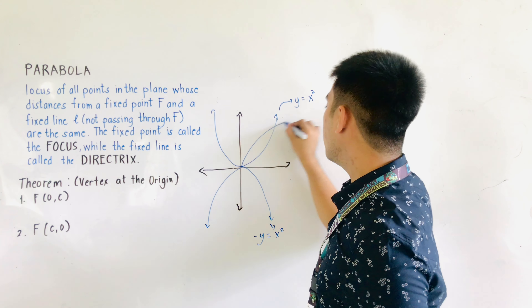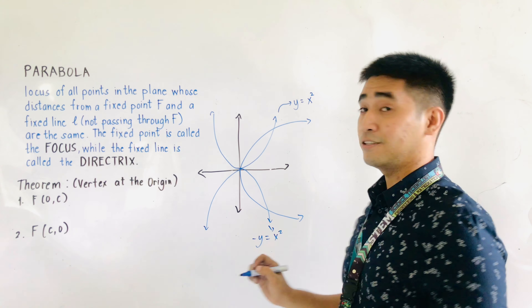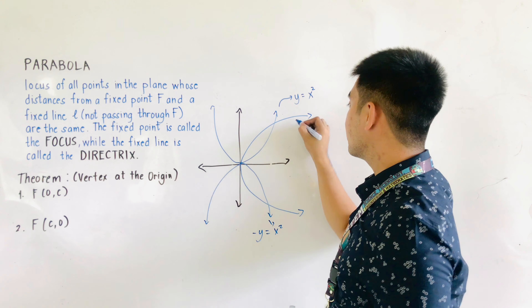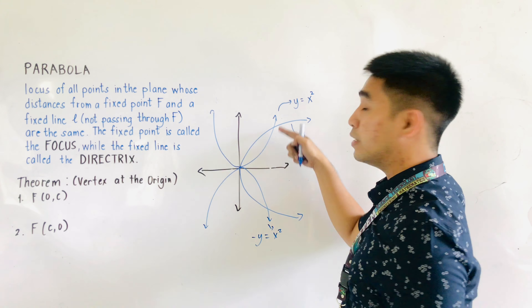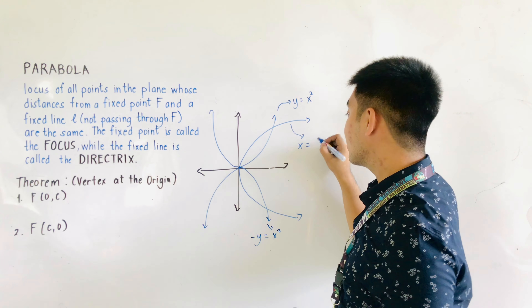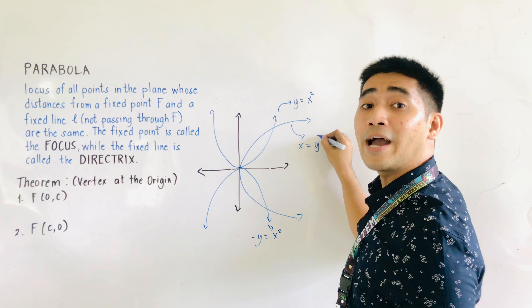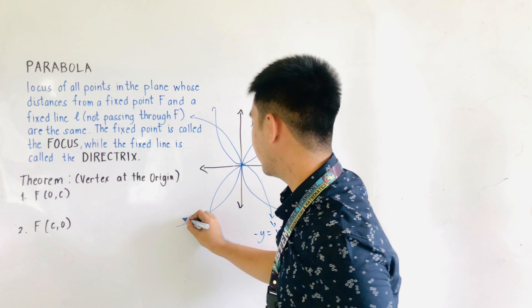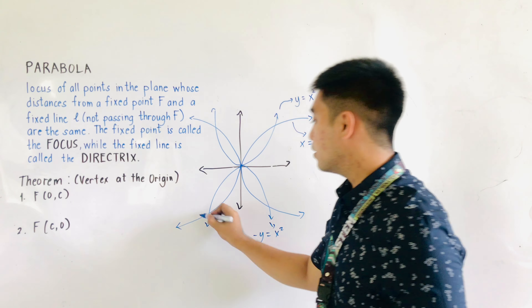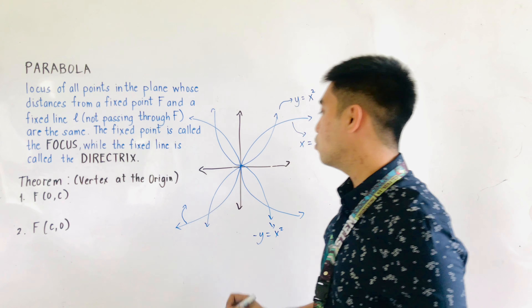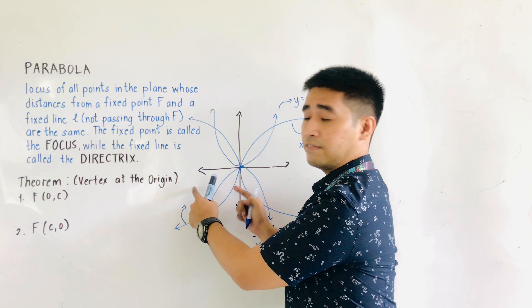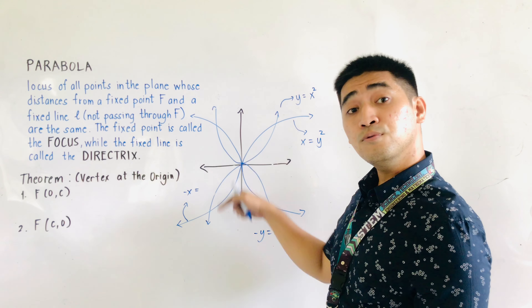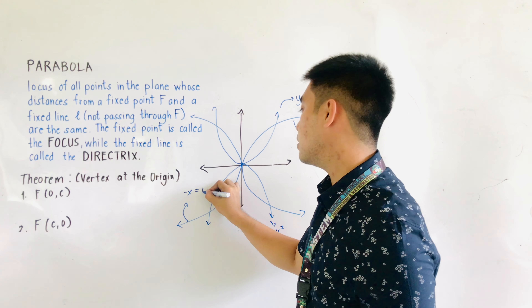If this is the parabola opening to the right, this is a positive x value. So the equation is x is equal to y squared, since we have two values of y. For a parabola opening to the left, this is a negative x value. Therefore, the equation is negative x is equal to y squared.